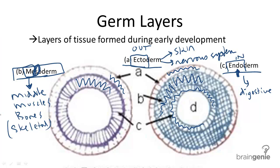Remember that the three germ layers in animals developed greater complexity over the evolutionary timeline. The three in order from outer to inner are ectoderm, mesoderm, and endoderm. Our earliest organisms only consisted of two germ layers, the ectoderm and the endoderm.